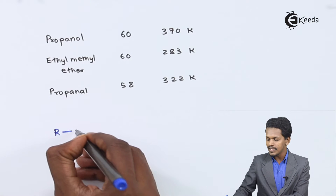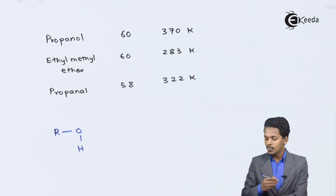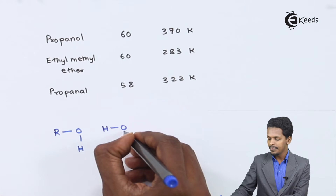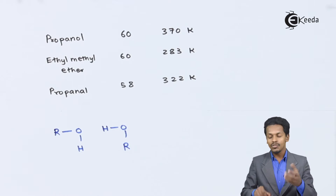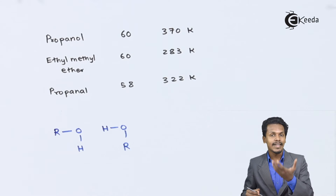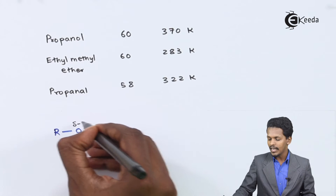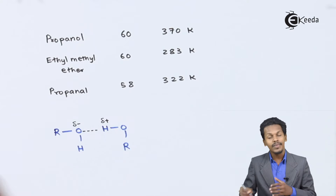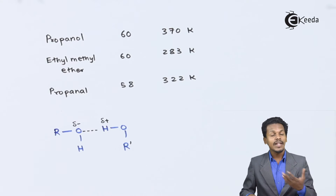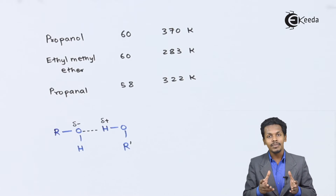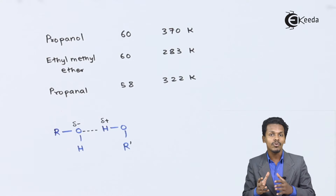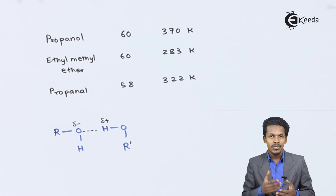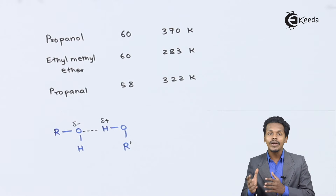For example, if we consider one alcohol molecule as R-O-H and another as H-O-R, a hydrogen bond forms between the oxygen of one molecule and the hydrogen of the other. The oxygen is partially negative and the hydrogen is partially positive, creating an attractive force between the two alcohol molecules. This intermolecular interaction is what gives alcohols their higher boiling point.